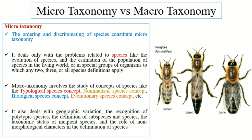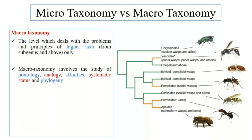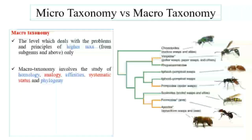Next is Macrotaxonomy. In Macrotaxonomy, we deal with species at higher taxa levels, such as subgenus, genus, family, and order. When we study at this level, we call it Macrotaxonomy.